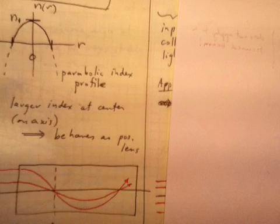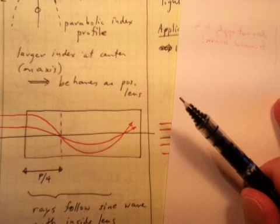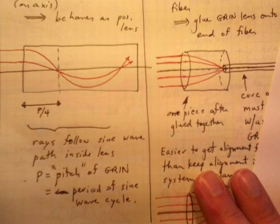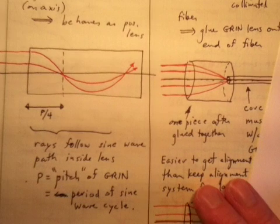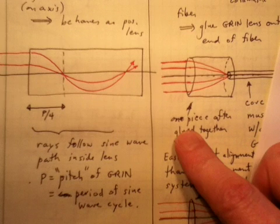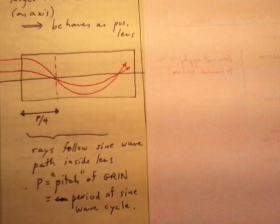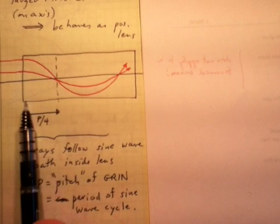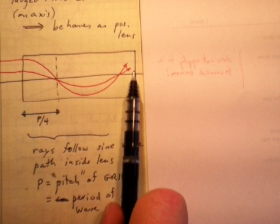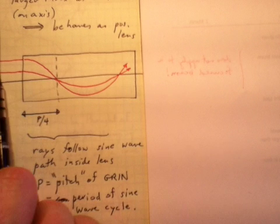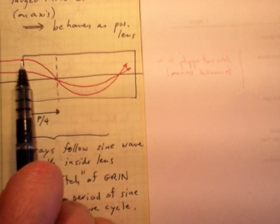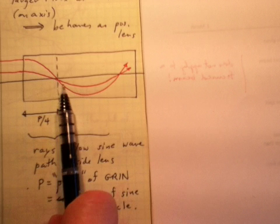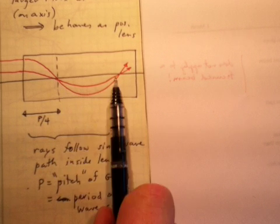So it has a larger index at the center of the axis, and that means it behaves as a positive lens in some sense. In other words, it causes light to be brought to a focus. And the idea here is that when we have parallel beams, when we have a beam parallel hitting this cylinder here, this is now a GRIN lens cylinder viewed from the side, a beam that comes in parallel and hits it will actually be bent towards the axis. But then as it goes away from the axis, it gets bent around again and comes back to the axis.